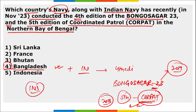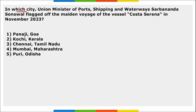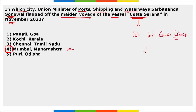INS Kuthar and INS Kiltan took part in the Bongo Sagar exercise. In which city did Union Minister of Ports, Shipping and Waterways Sarbananda Sonowal flag off the maiden voyage of the vessel Costa Serene in November 2023? It was flagged off from Mumbai, Maharashtra. Costa Serene is India's first international cruise liner, symbolizing the rise of cruise tourism in India.